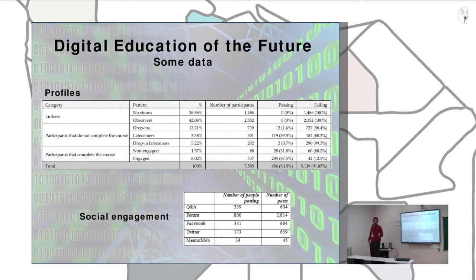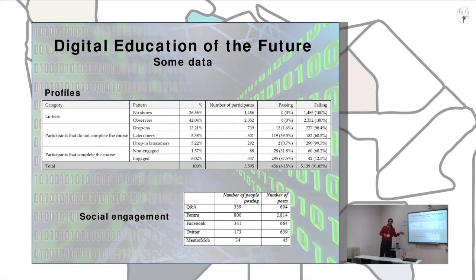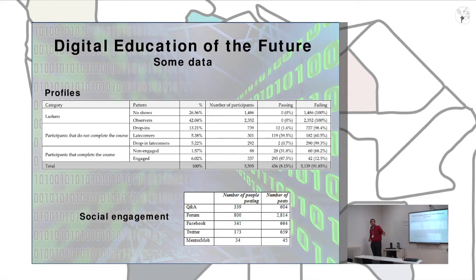And those in between — those who do not start and do not finish. Among those who complete the course, I classify them into groups: those who are not engaged, meaning they complete the assessment but do not participate in the social tools; and those who are engaged, meaning they also participate in social tools. You can also see the number of people posting and the number of posts in each of the five social tools we employed.